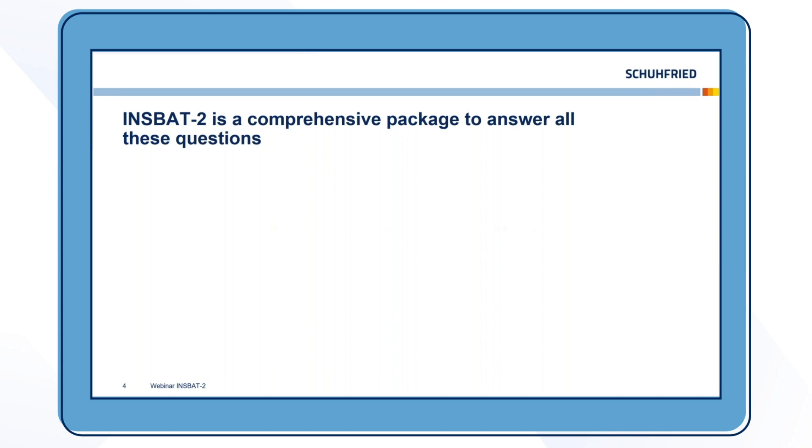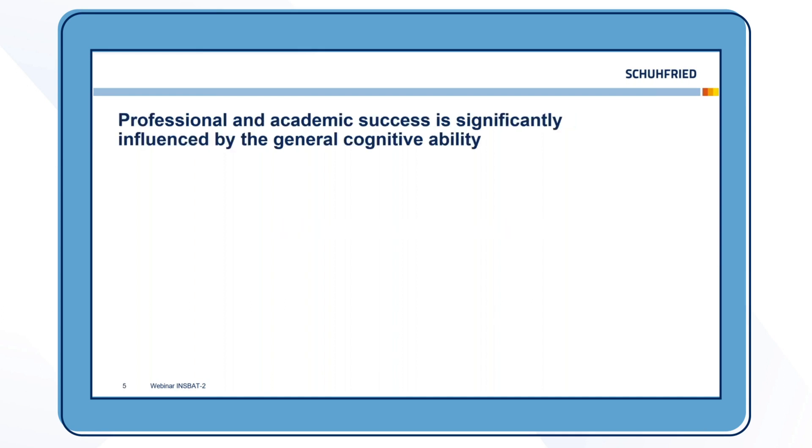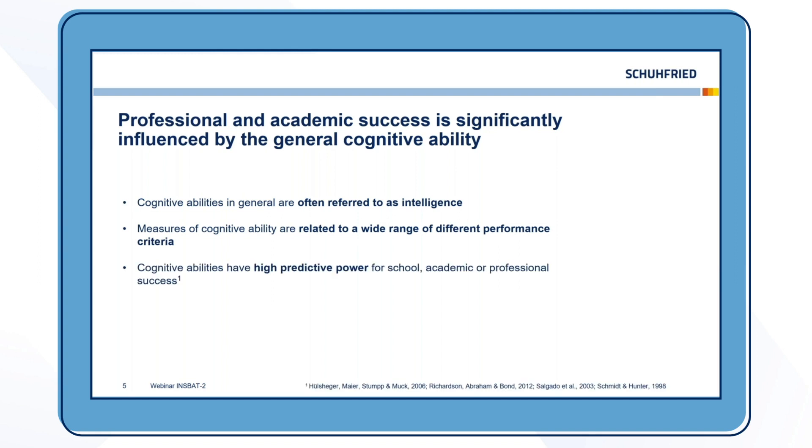How do we do that? The INSBAT-2 measures cognitive ability, and professional and academic success is significantly influenced by general cognitive ability. Cognitive abilities in general are often referred to as intelligence. Measures of cognitive ability are related to a wide range of different performance criteria, and cognitive abilities have high predictive power for school, academic and professional success.